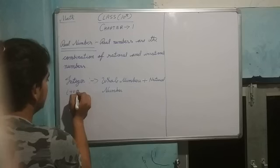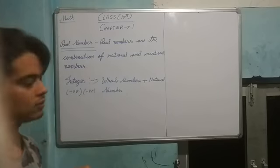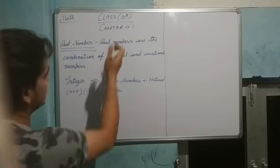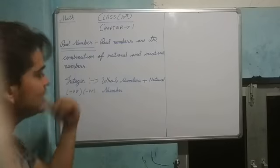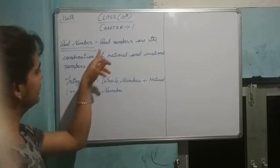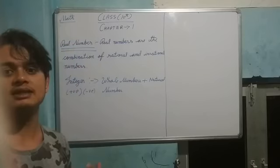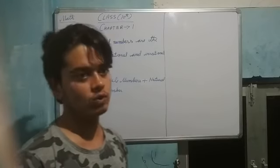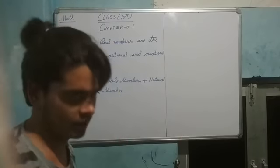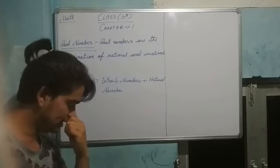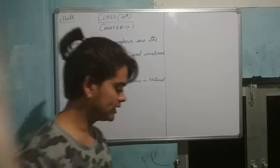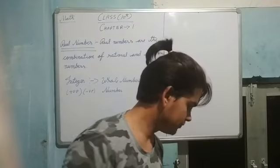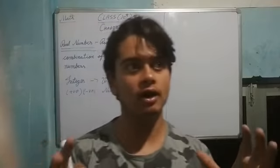Integers can be positive and negative. So if I talk about real numbers, they include rational numbers, and integers include whole numbers and natural numbers. If rational and irrational numbers are the combination of real numbers, then whole numbers and integers are subsets within that system.